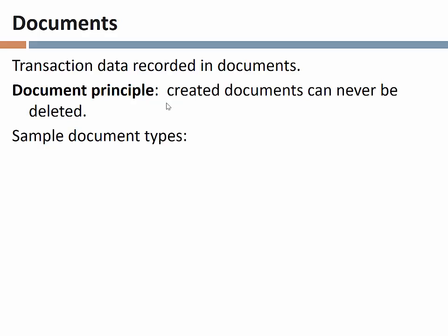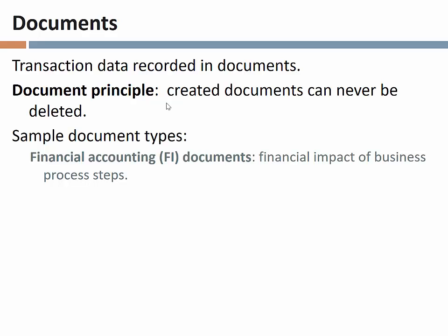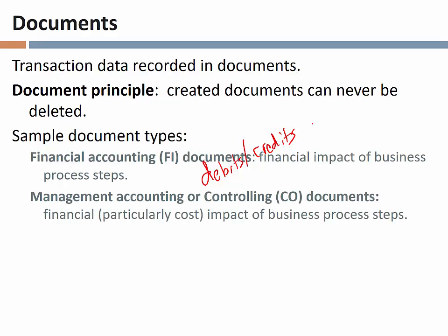There are a variety of different kinds of documents. Financial accounting documents capture the financial impact of business process steps — literally capturing debits and credits that correspond with particular activities. If we ship out a material and that has a financial accounting impact, that's captured in the financial accounting document, and we can see when we shipped that product we debited this account, credited this account, and see the dollar values associated with it.